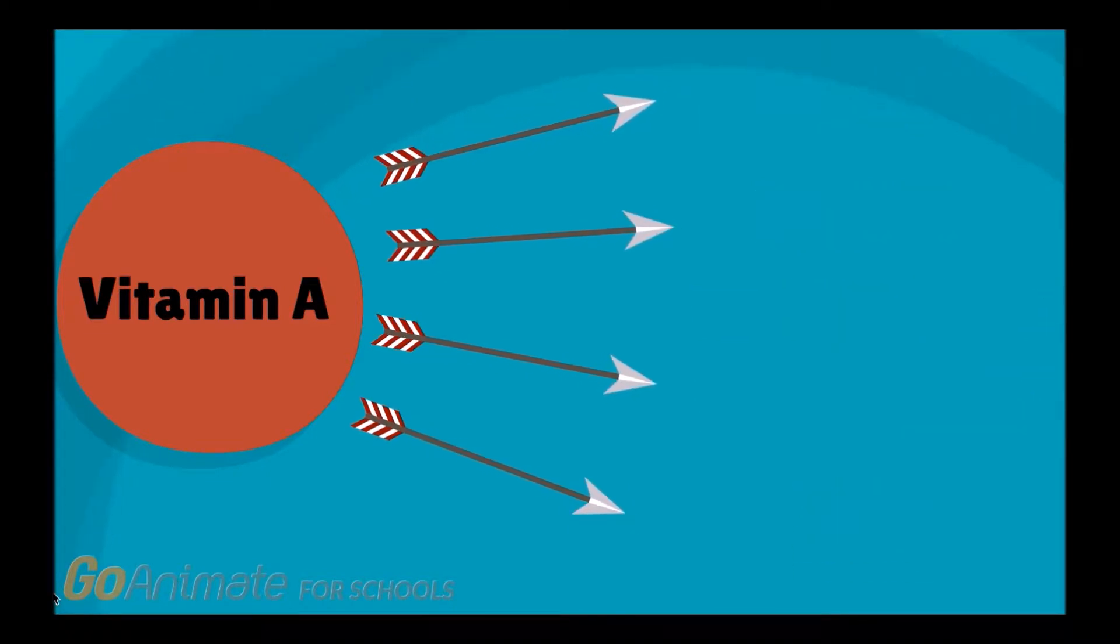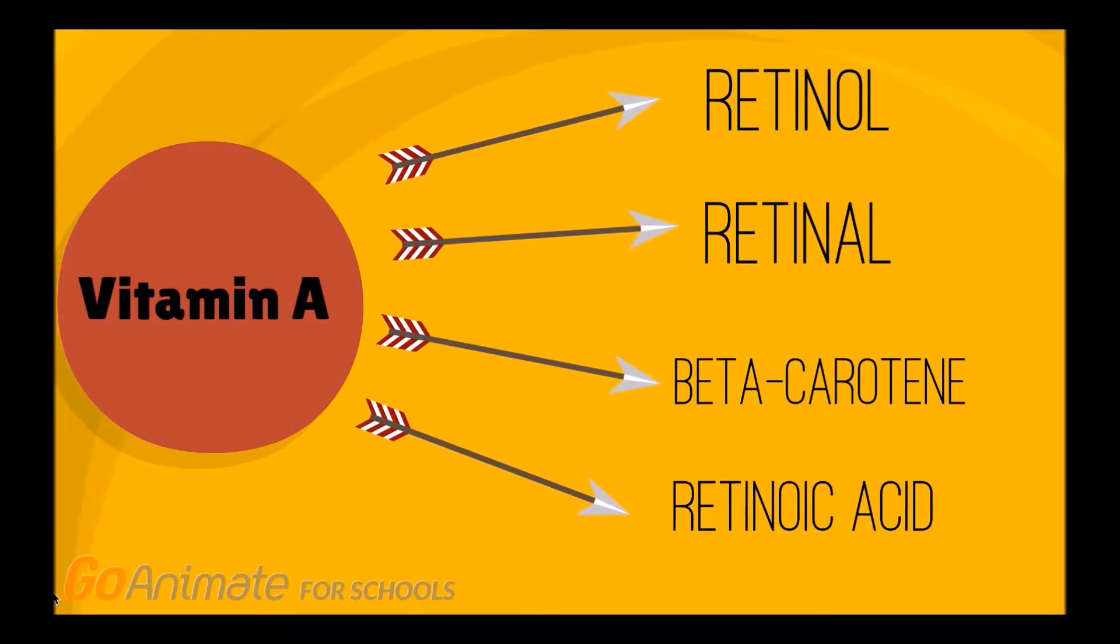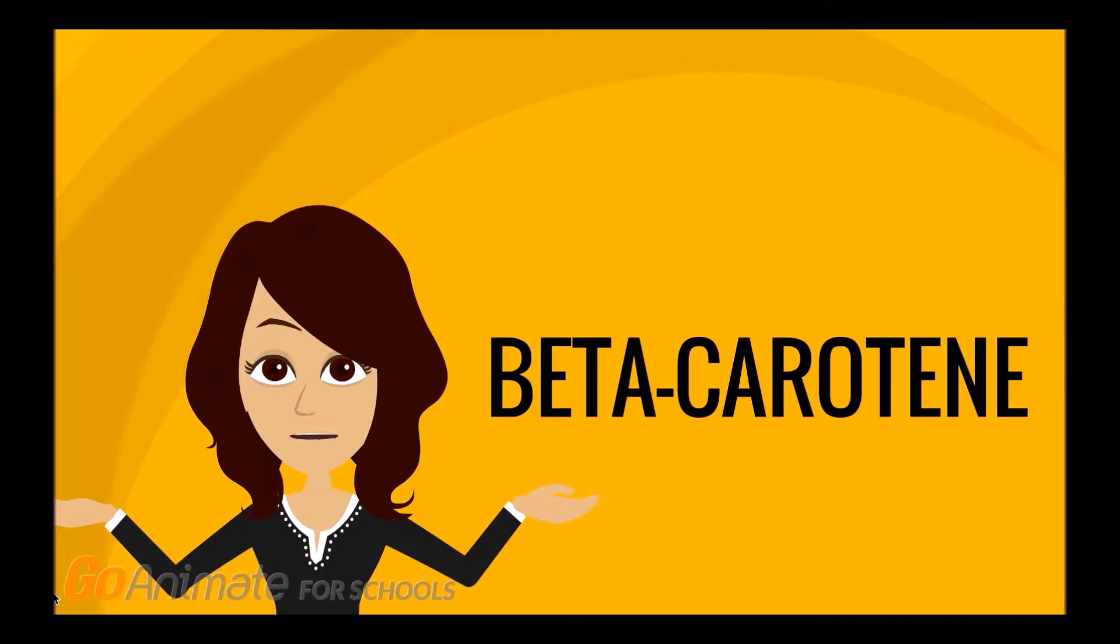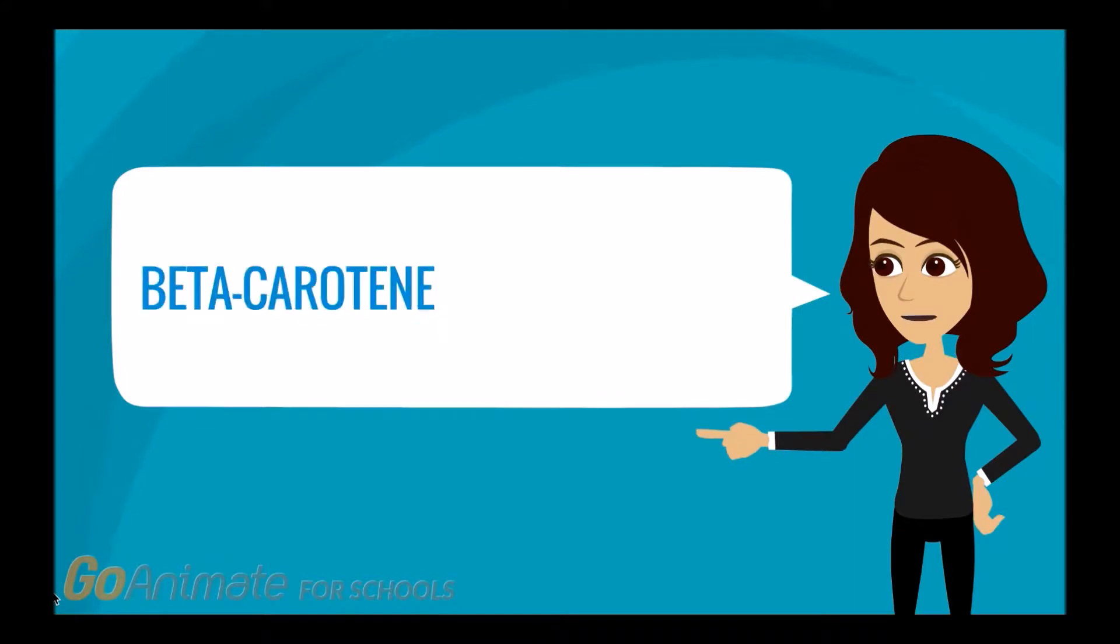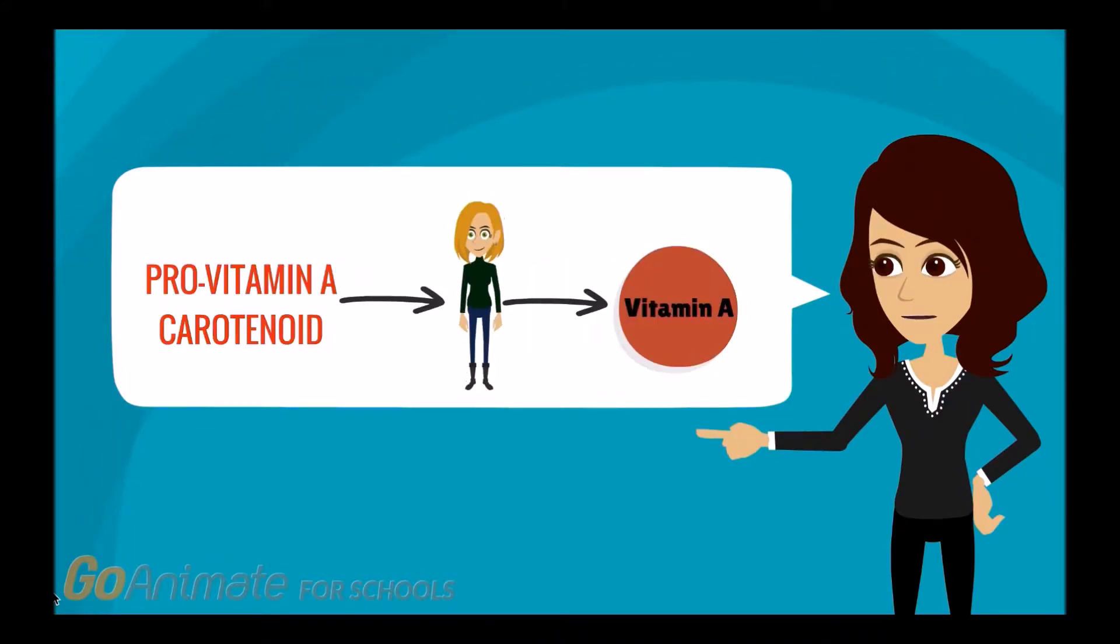So vitamin A encompasses a few different compounds, all of which are classified as fat-soluble retinoids. But we're going to focus on beta-carotene. Based on its name, you can tell it's found in high amounts in carrots, as well as broccoli, cantaloupe, and squash. How does beta-carotene relate to vision?